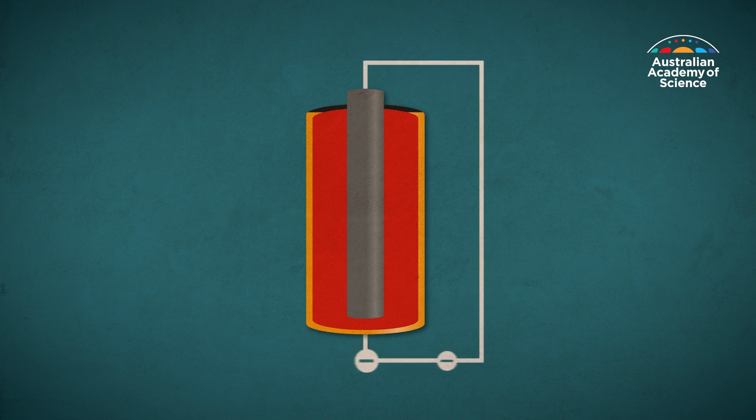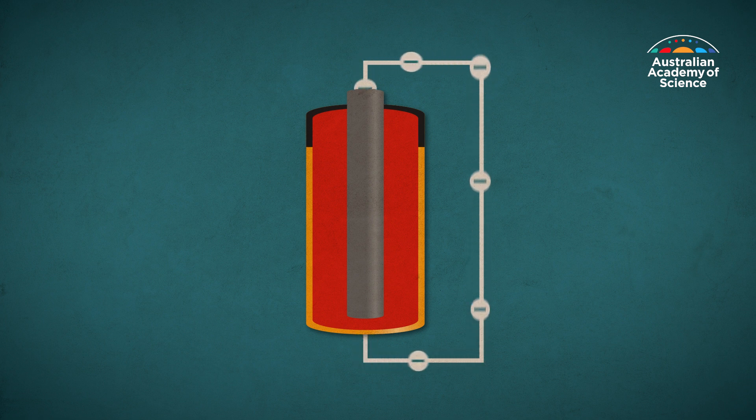The anode oxidizes releasing electrons, which the cathode accepts in a chemical reaction called reduction.